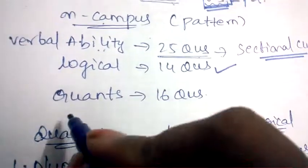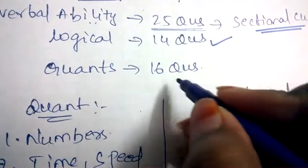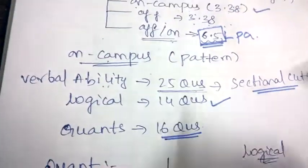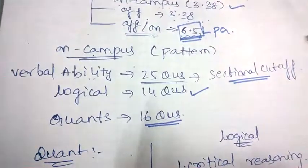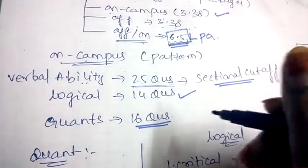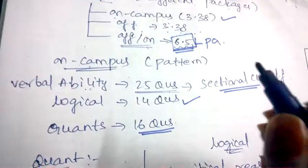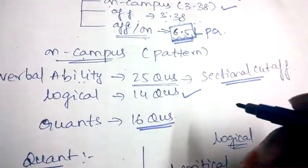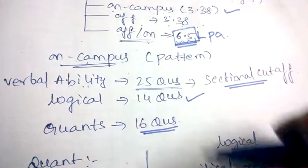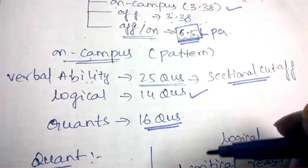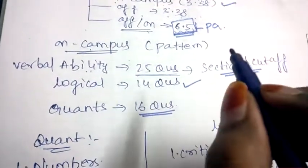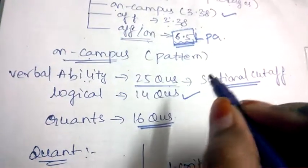Coming to quantitative aptitude, you'll be asked to solve 16 questions. Coming to written test, the important tip is that you need to maintain and manage your time well. Use shortcuts instead of using the lengthy methods in order to solve all the sums within the given time.